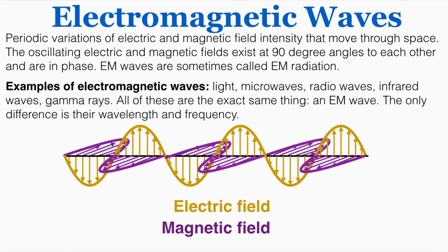This video is about electromagnetic waves. The exact physics definition of electromagnetic waves is periodic variations of electric and magnetic field intensity that move through space. The oscillating electric and magnetic fields exist at 90 degree angles to each other and are in phase. EM waves are sometimes called EM radiation. You know these better as waves of light. This is what light fundamentally is.